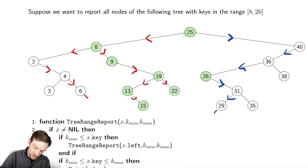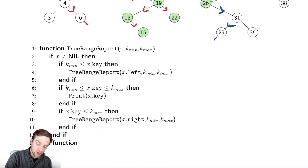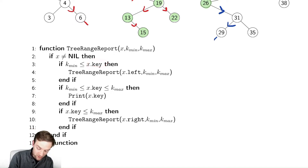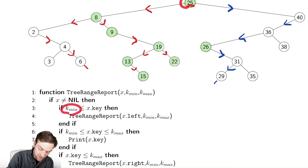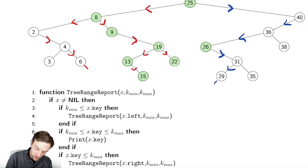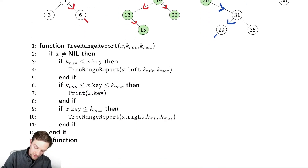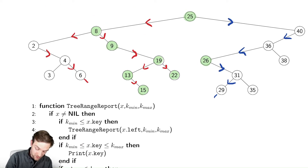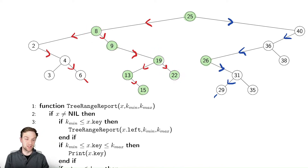Let's see how this looks in the code. If the value we're looking at is bigger than the minimum — for example, 25 was bigger than the minimum — we search to the left. If the value is between the two bounds, we print it out. And if the value is smaller than the max, we search to the right. So 8 was smaller than 26, we keep searching to the right. This code doesn't look too bad.